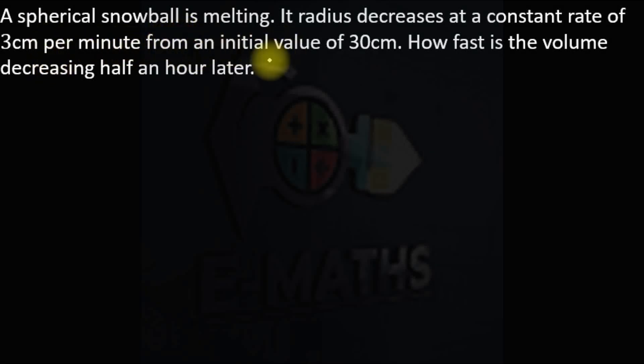A spherical snowball is melting. Its radius decreases at a rate of 3 cm per minute from an initial value of 30 cm. How fast is the volume decreasing half an hour later? Okay, this will give us initial value, so this is a combination of differentiation and integration. That's the application.